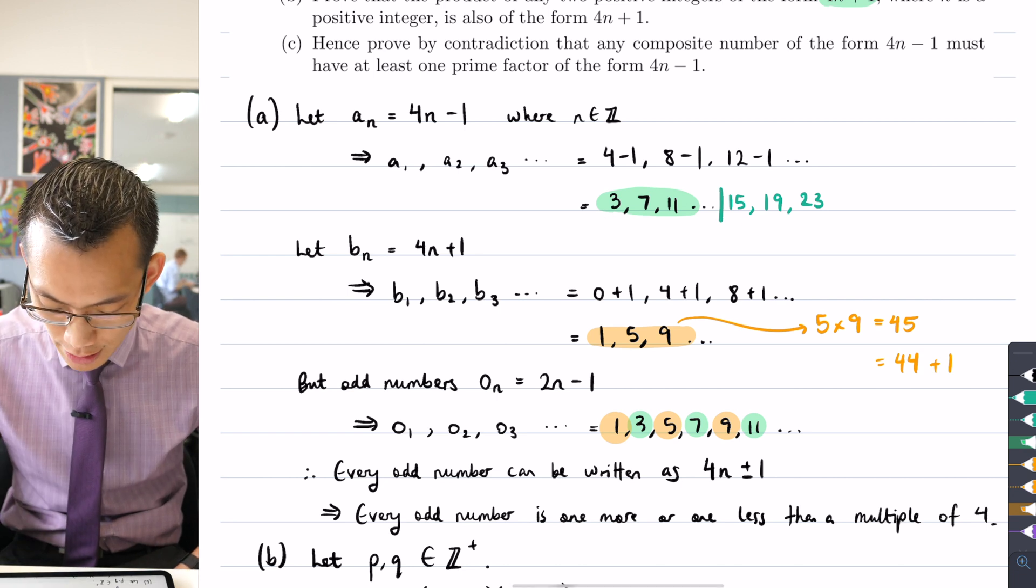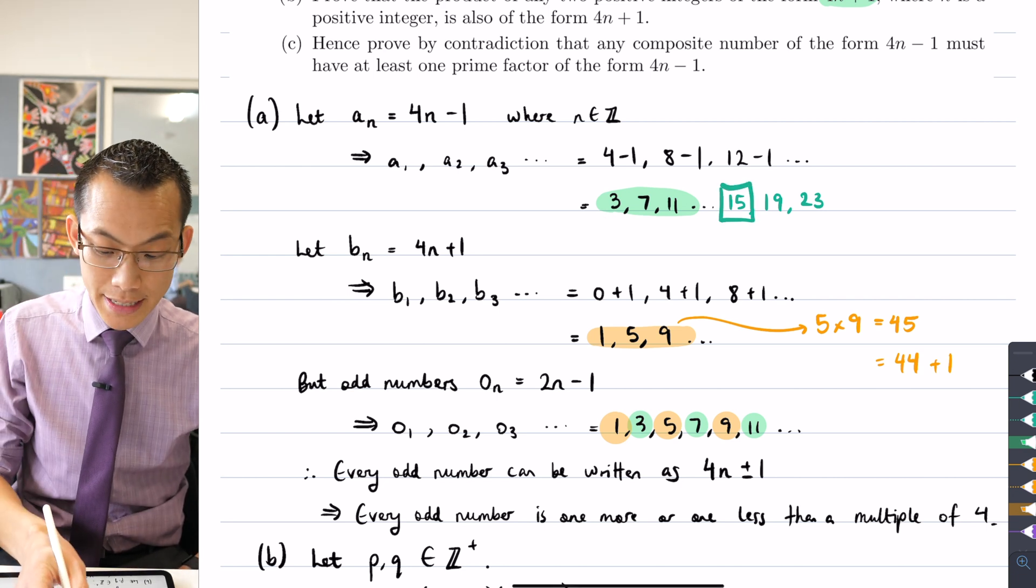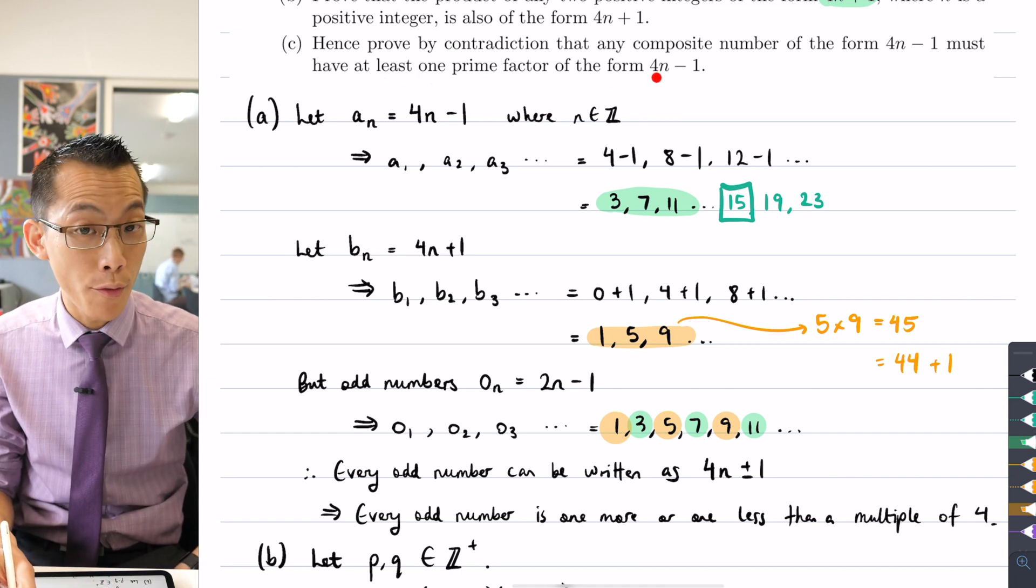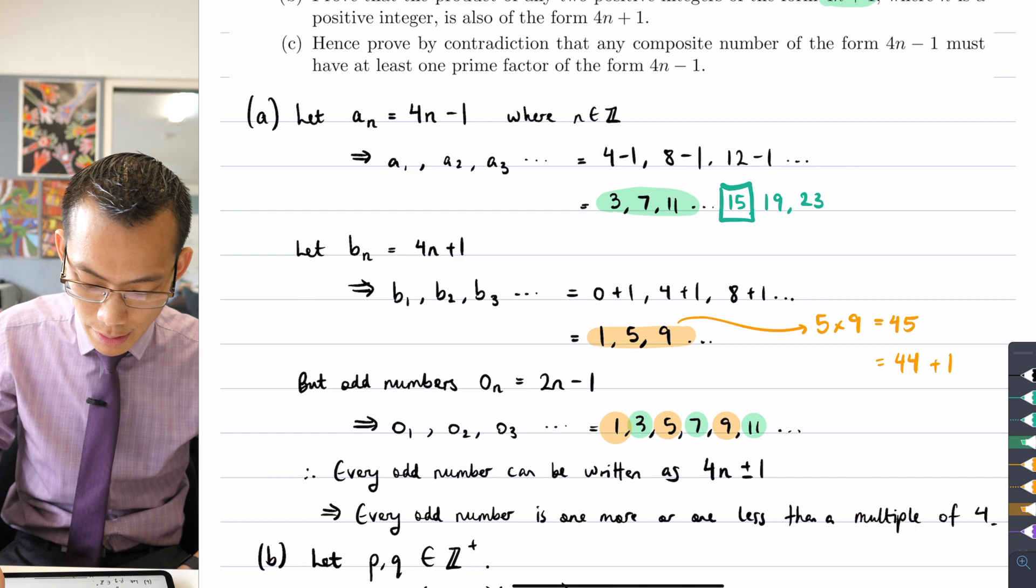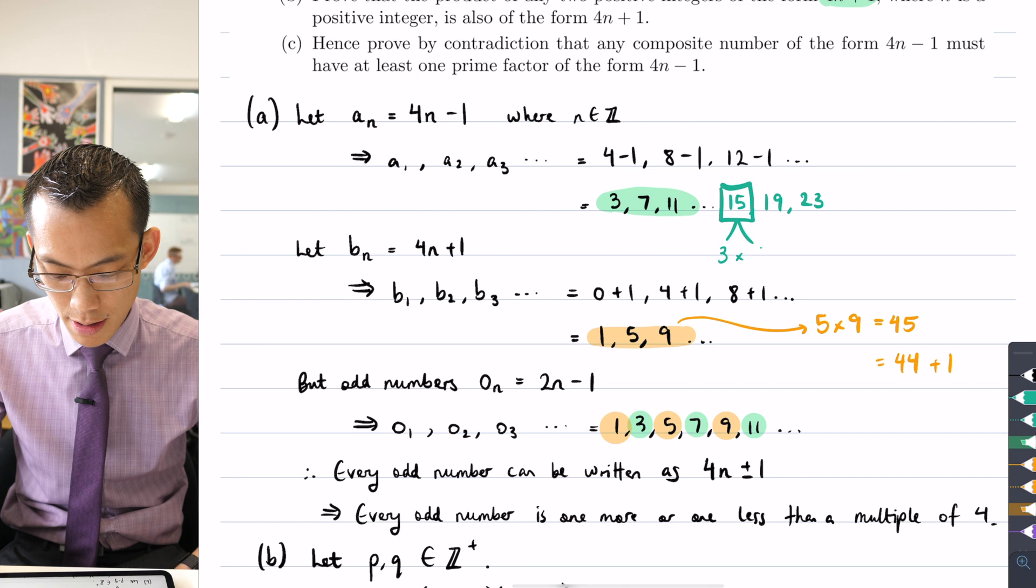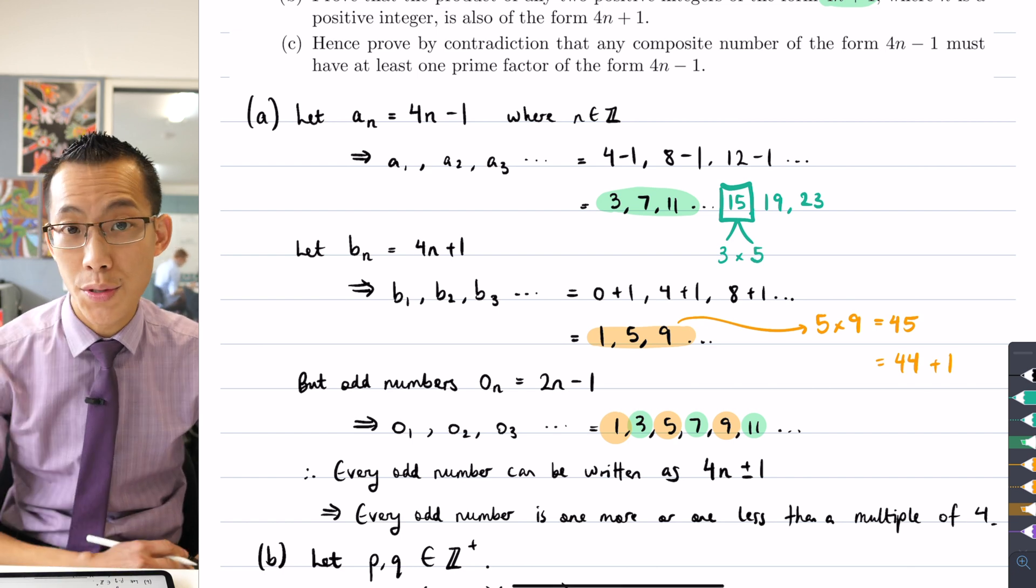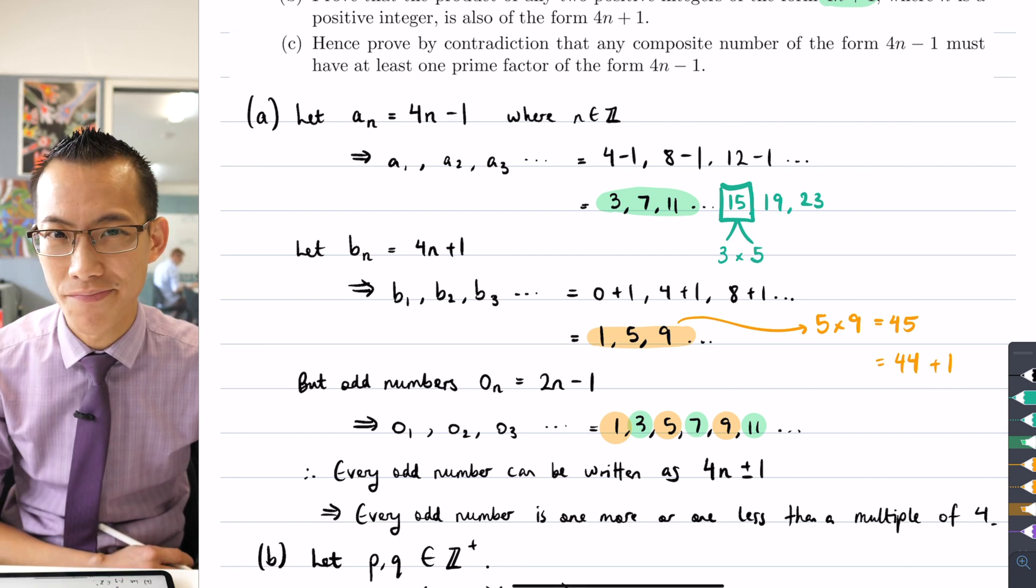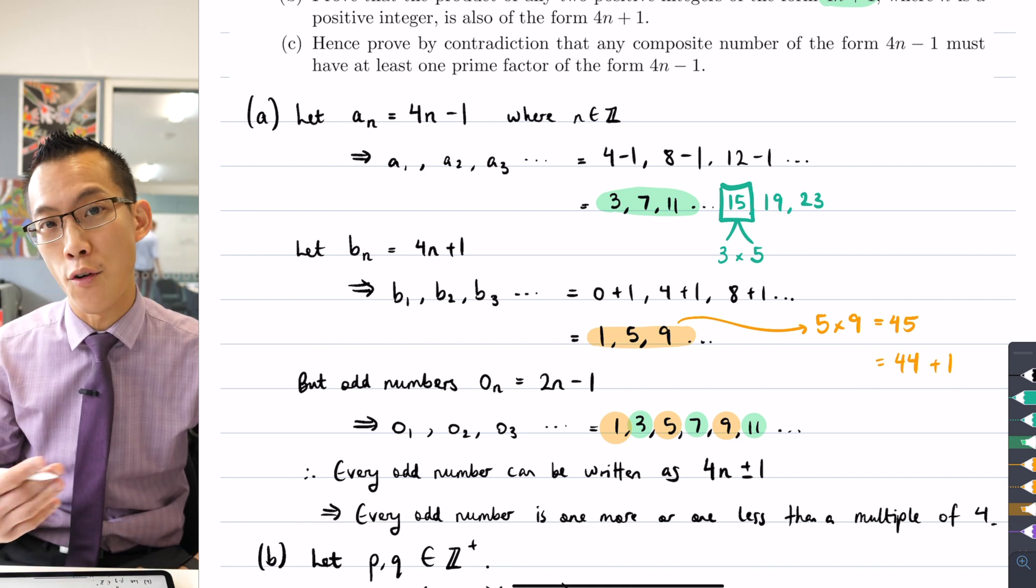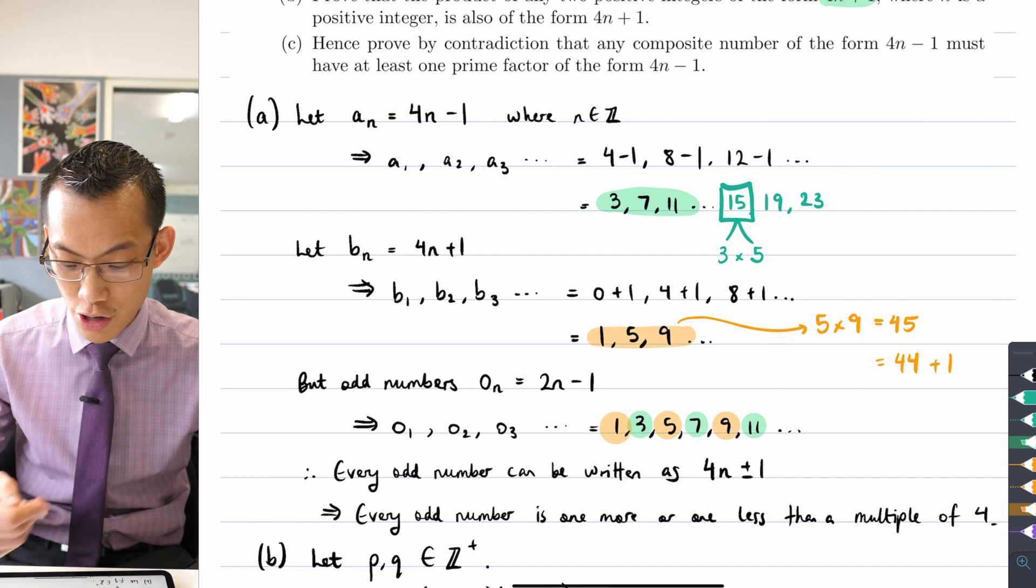So if I just have a look at that 15 right there, does it have at least one prime factor of the form 4n minus 1? Well, you can quickly verify that that is true. 15 has two prime factors, namely 3 and 5. Is one of those of that 4n minus 1 format? And the answer is yes, it is. The 3 is in the 4n minus 1 format and you could keep going.